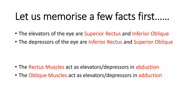Now this is something I know most of you are aware of. But in order to understand the PARCS 3-step test, we have to know something more. We have to understand in which position the rectus muscles and oblique muscles function best. When the eye is in a position of abduction, the elevation and depression functions are done by the rectus muscles. But when the eye is in a position of adduction, the elevation and depression is done by the oblique muscles.